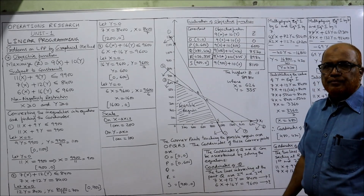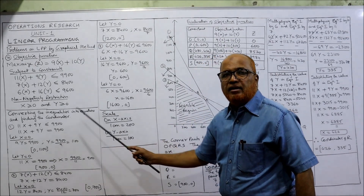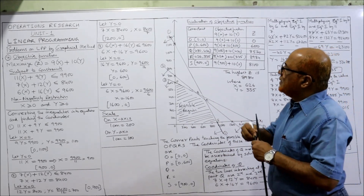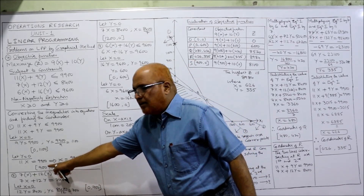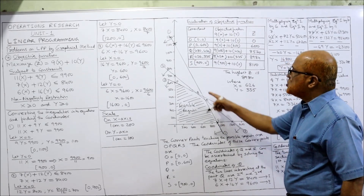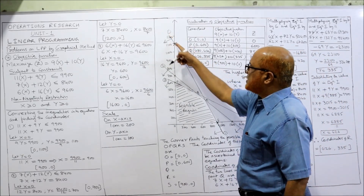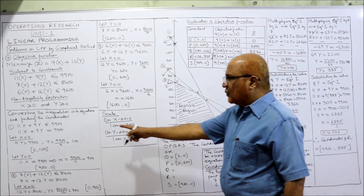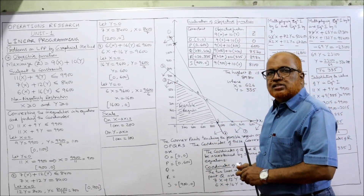Now we plot the points. For the first equation: when x = 0, y = 1100, mark that point. When x = 900, y = 0, mark that point. Join these two points with a scale — this is the first line. Since the inequality is less than or equal to, draw a downward arrow toward the origin.